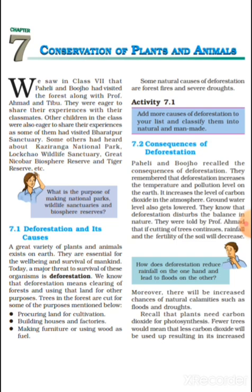Paheli evam Bujo ne van unmoolanke parinaam yaad karne ka prayas kiya. Unhein yaad hai ki van unmoolanke kaaran prithvi taap evam pradushan ke istar mein vridhi hoti hai. Isse bayumandal mein carbon dioxide ka istar badhta hai. Bhoom jal istar ka bhi nimnikaran ho jaata hai. Professor Ahmed ne bataya ki yadi vrikshon ki isi prakar anwarat katai chalti rahi to barsha evam bhoomi ki urvarata mein kami aa jayegi.